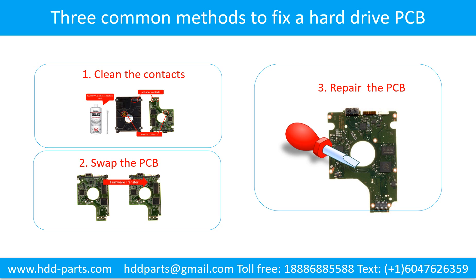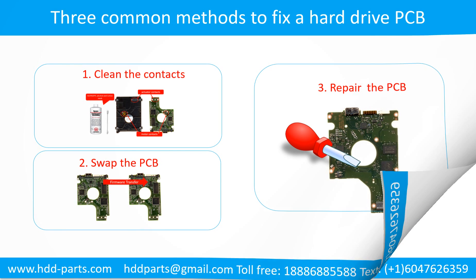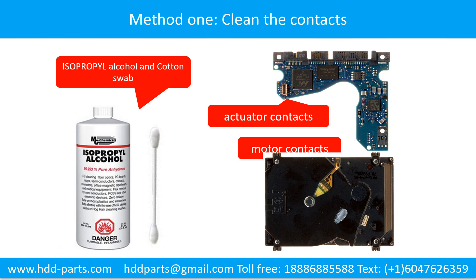Three common methods to fix a hard drive printed circuit board: 1. Clean the contacts, 2. Swap the printed circuit board, 3. Repair the printed circuit board. Method 1: Clean the contacts. Cleaning the contacts on the PCB board and also on the hard drive can fix the problem caused by poor connection between the PCB board and the hard drive.